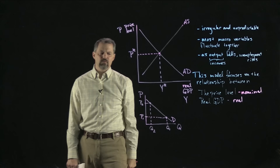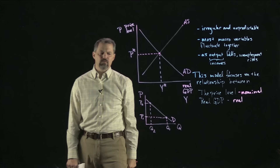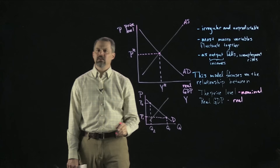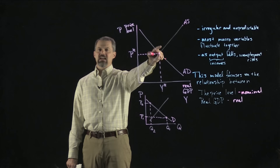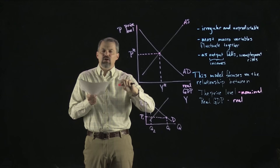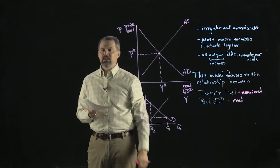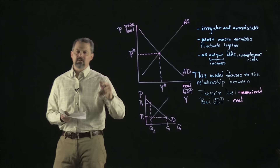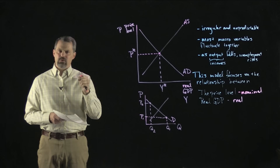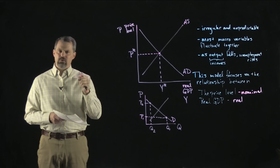The same applies to the supply side. A regular supply curve for one good is very different from the aggregate supply curve, which represents how much of all goods and services all firms want to sell depending on the price level. So keep that in mind. Let's start by thinking about aggregate demand — why the aggregate demand curve slopes down, and what causes it to shift.